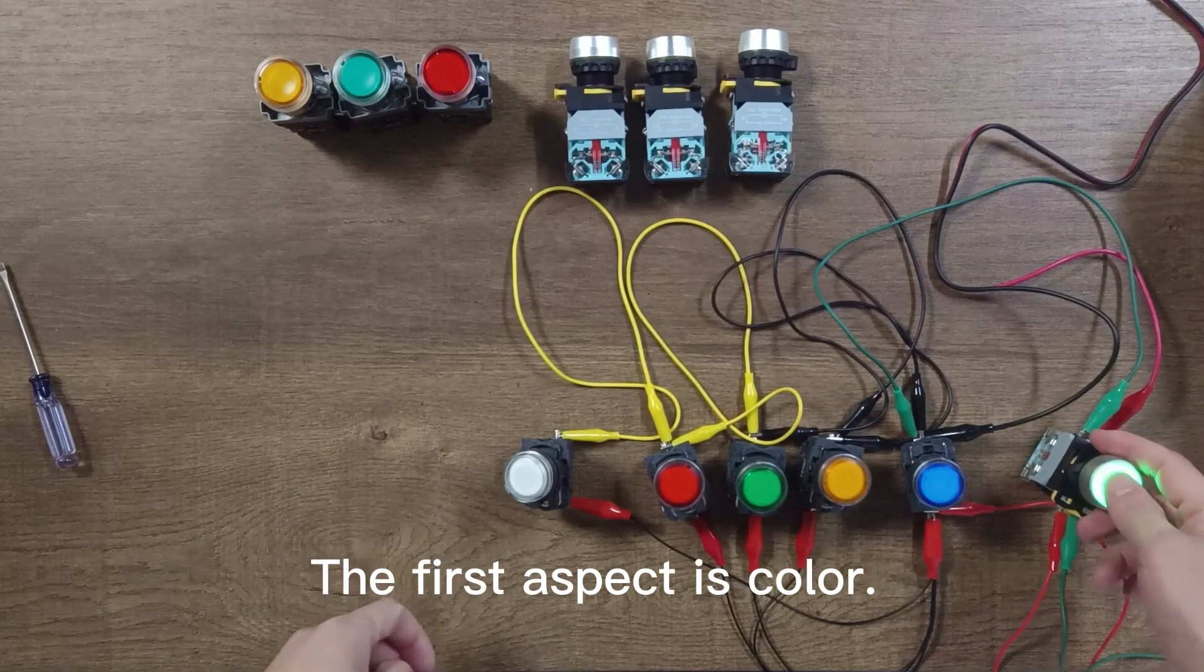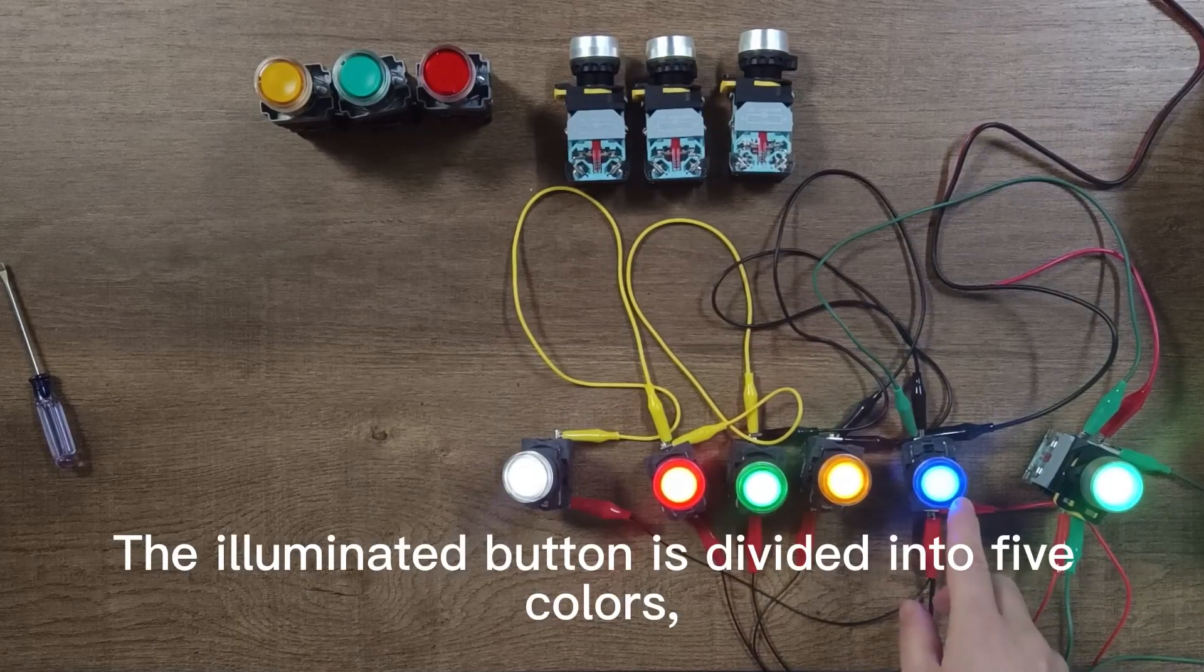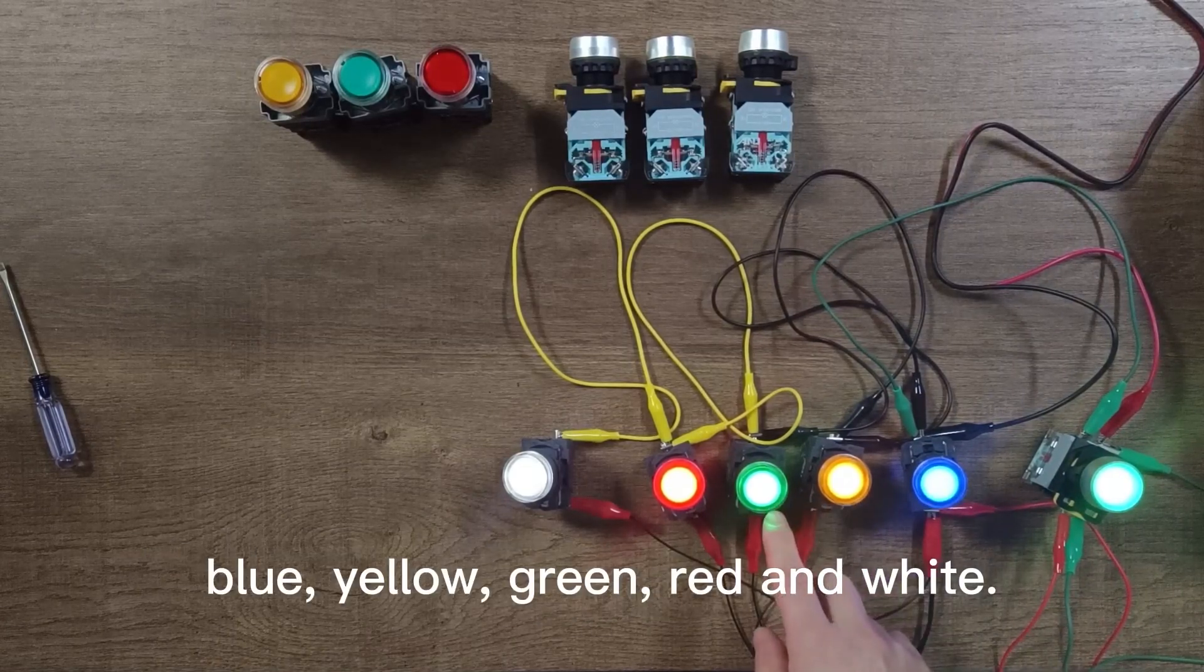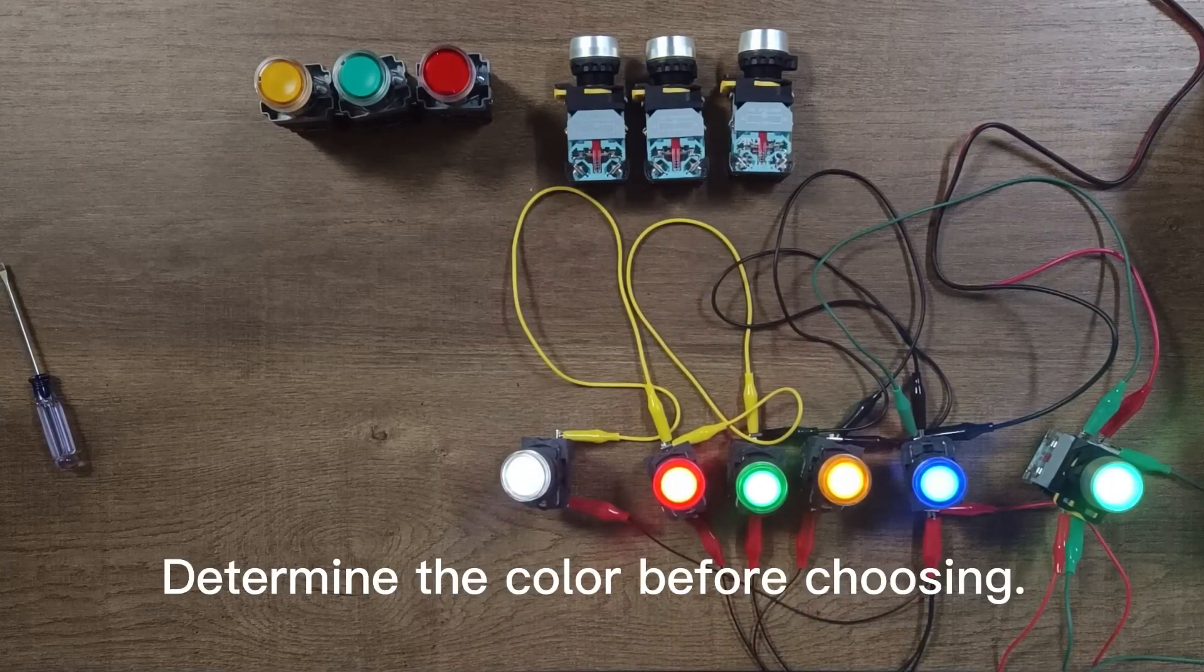The first aspect is color. The illuminated button is divided into five colors: blue, yellow, green, red, and white. Determine the color before choosing.